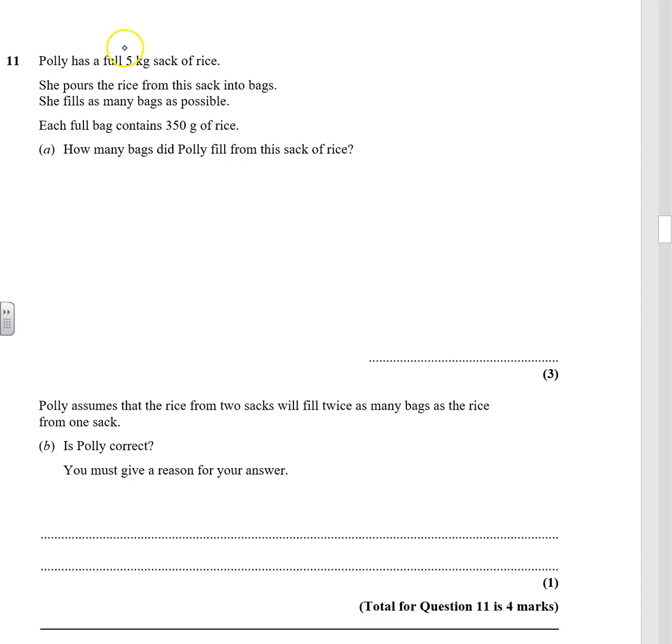Question 11. Polly has a full 5kg sack of rice. She pours the rice from this sack into bags. She fills as many bags as possible. Each bag contains 350g of rice.